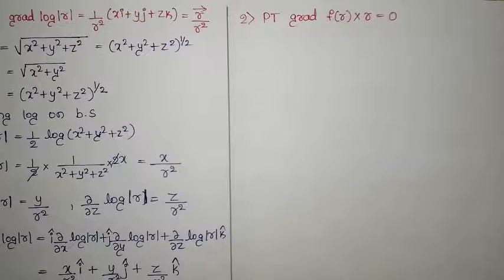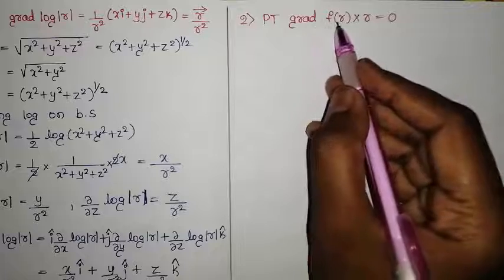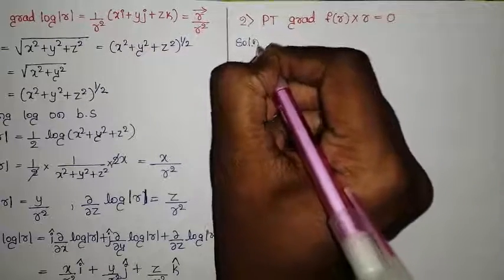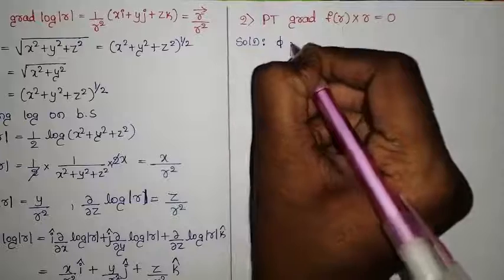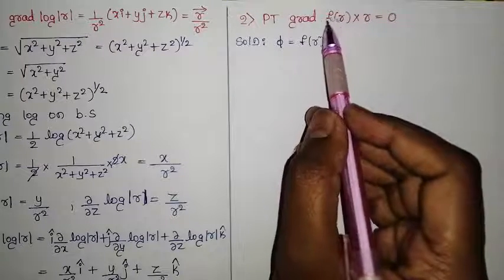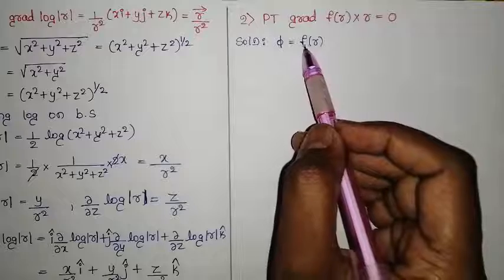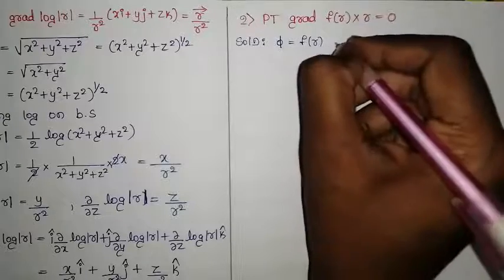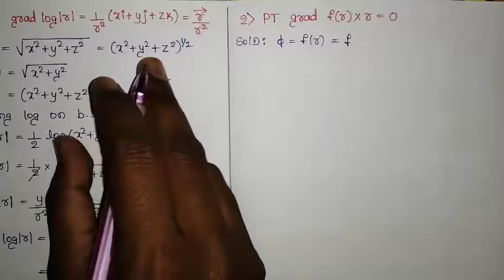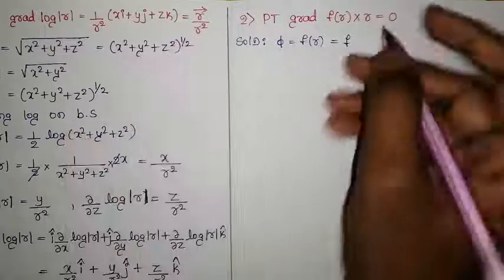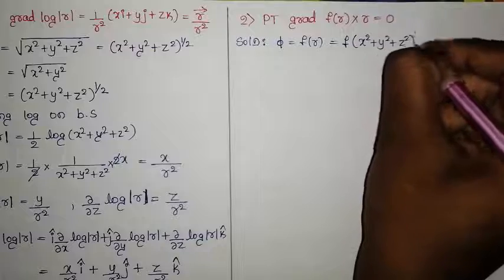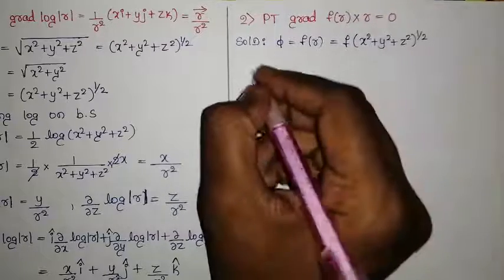The second example: prove that ∇f(r) × r = 0. Here, we consider π as f(r). We know r equals (x² + y² + z²)^(1/2), so π is written as f of (x² + y² + z²)^(1/2).